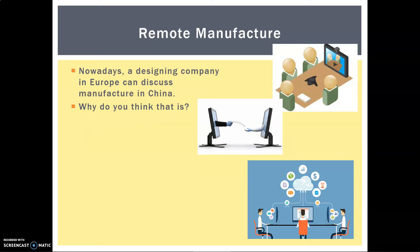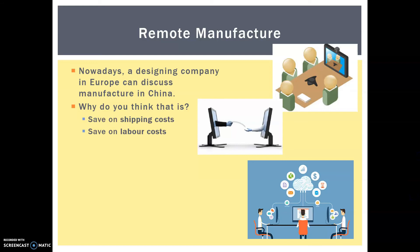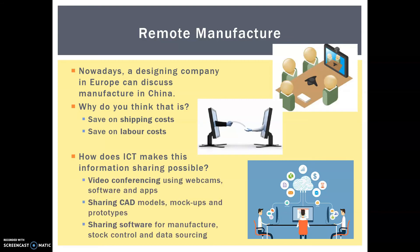Now we'll do an aside and talk about remote manufacture — doing things at a distance. Nowadays design companies in Europe could discuss manufacture in China, because making things there saves on labour costs and shipping costs. ICT makes this information sharing possible. We have things like video conferencing using webcams, software and apps. We can share CAD models, computer-aided design models, mock-ups and prototypes — you can literally design it on one computer and send it thousands of miles. You don't have to get big blueprints out anymore. And we can share software for manufacturing, stock control, and data sourcing.